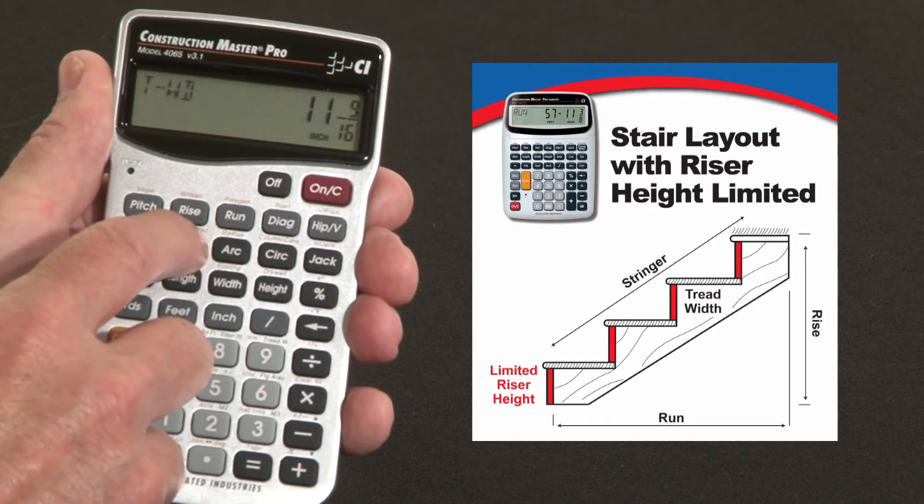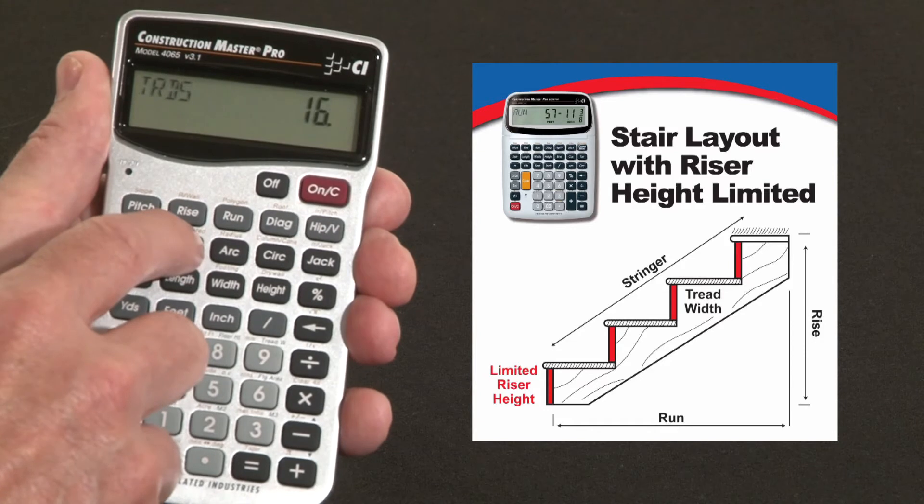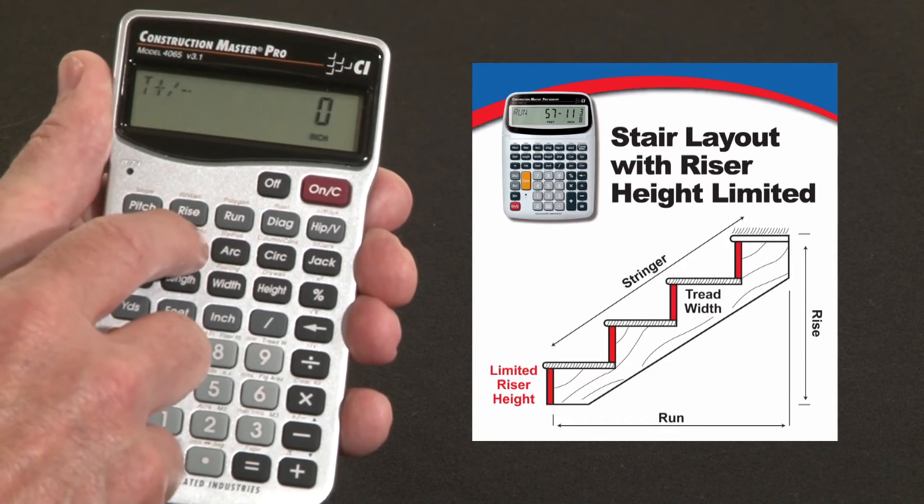The tread width is going to be eleven and nine-sixteenths inches. Sixteen treads, no adjustment to that.